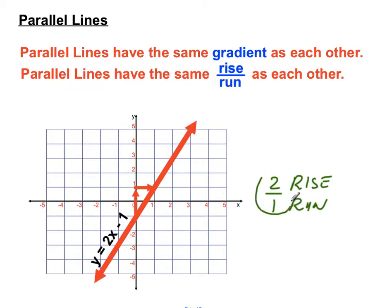Now 2 over 1 is a fraction. We don't really need to write the 1 in. And that's why that equation, that linear equation we have here, has a 2 in front of the x. That's where we look for the gradient section of a y equals mx plus b type linear equation. So that's the gradient there.